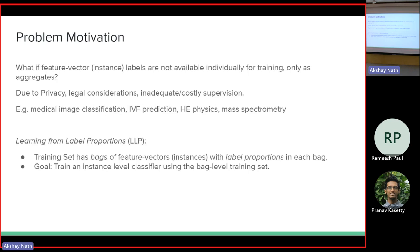In this case, the labels are not available for individual feature vectors. This sort of situation can happen because of privacy concerns — you don't want to reveal the labels for individual feature vectors. In many medical applications, you may not want to reveal whether a particular patient has a disease or not. Maybe what you can reveal is, for a bunch of patients, how many of them have a disease. So this is the aggregate label — the sum of the labels for a subset of feature vectors. This can happen due to privacy concerns and legal considerations.